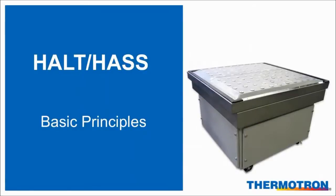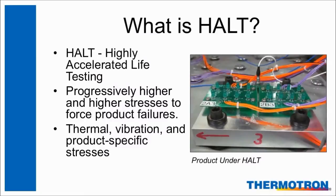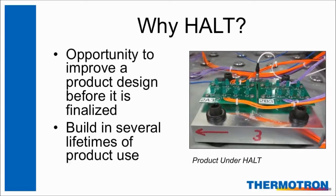Now I would like to hand it over to Mike Hicks, Thermatron Applications Engineer. He will be going over the basic principles of HALT and HASS. Highly Accelerated Life Testing, or HALT, is a test that uses progressively higher and higher stresses to determine potential product design weaknesses. Thermal, vibration, and product specific stresses such as voltage margining or humidity are used in HALT. The stress levels are typically increased significantly beyond the product specification and normal field stresses until it fails. The purpose of HALT is to quickly induce and detect as many failure modes as possible, expose the weakest points of the design, learn from the failure modes, and take corrective action. Failures found during HALT under high stresses are likely the same failures that will occur during a product's life cycle by much lower stresses over a long period of time. Ultimately, the idea is to build into the product several lifetimes of use in its field environment.